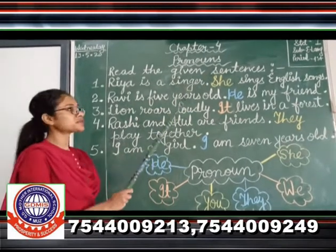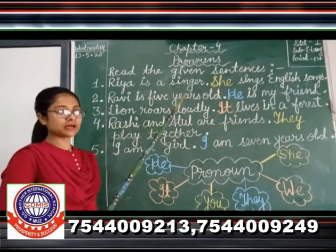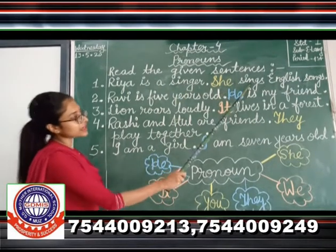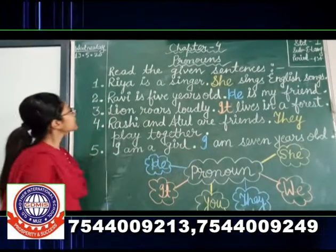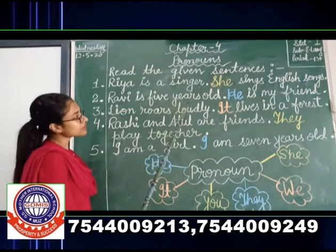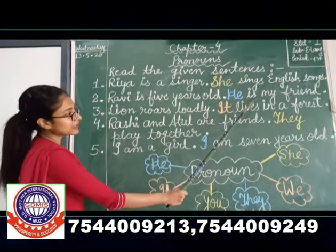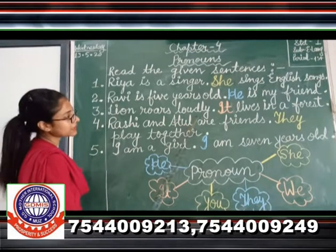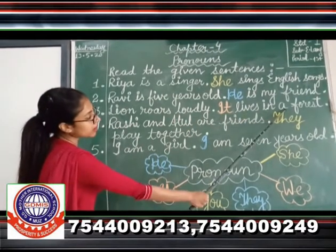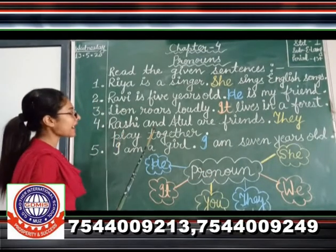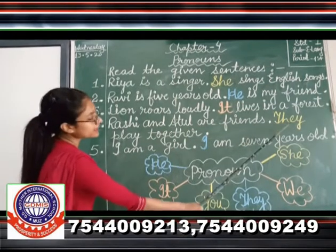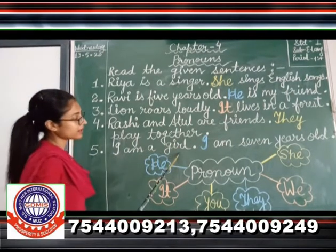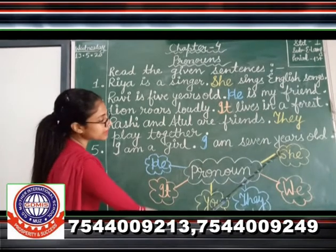Children, I am going to read out some sentences. You have to repeat it with me. Rhea is a singer. She sings English songs. Ravi is 5 years old. He is my friend. The lion roars loudly. It lives in a forest. Rashi and Atul are friends. They play together. I am a girl. I am 7 years old.